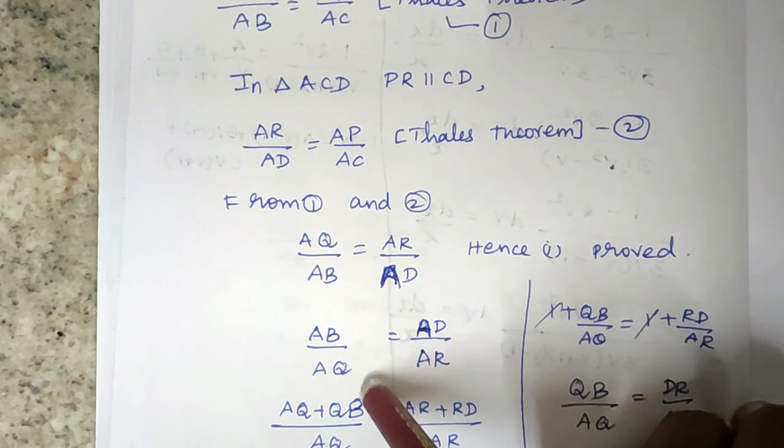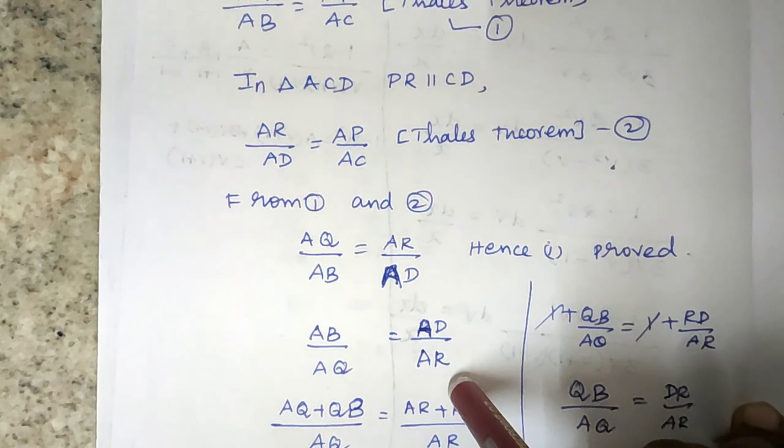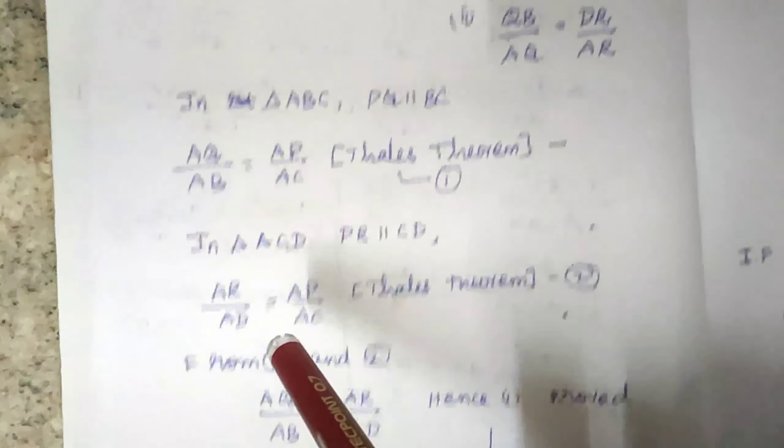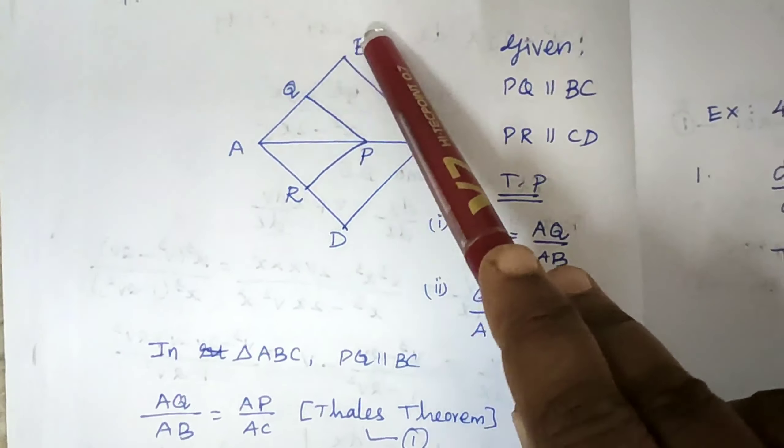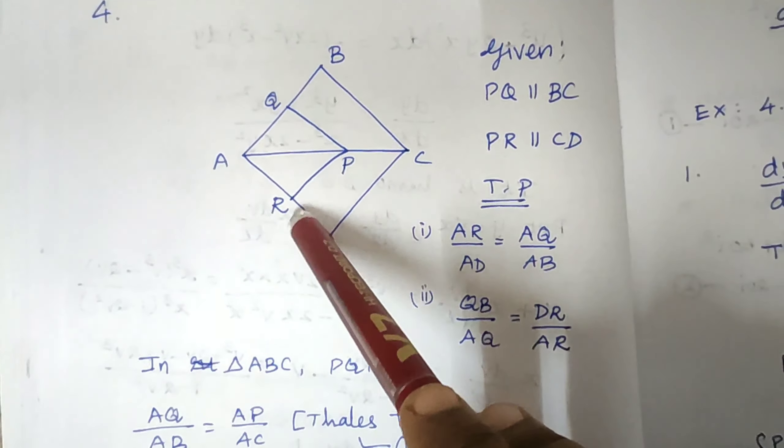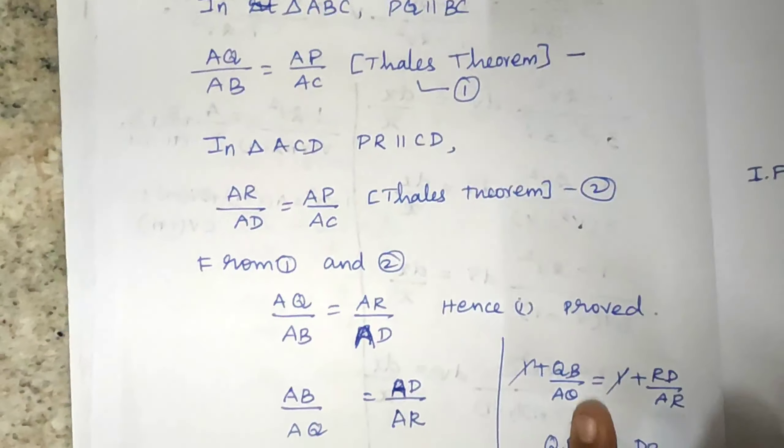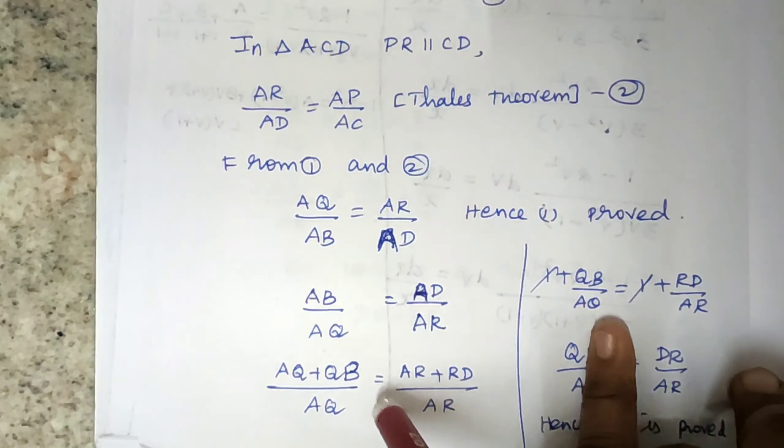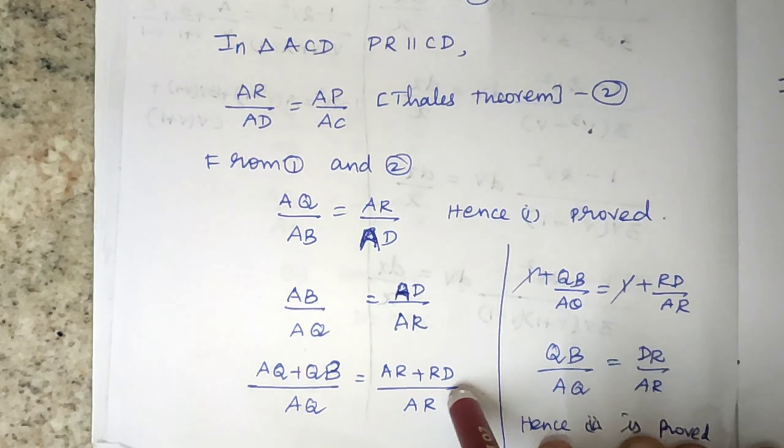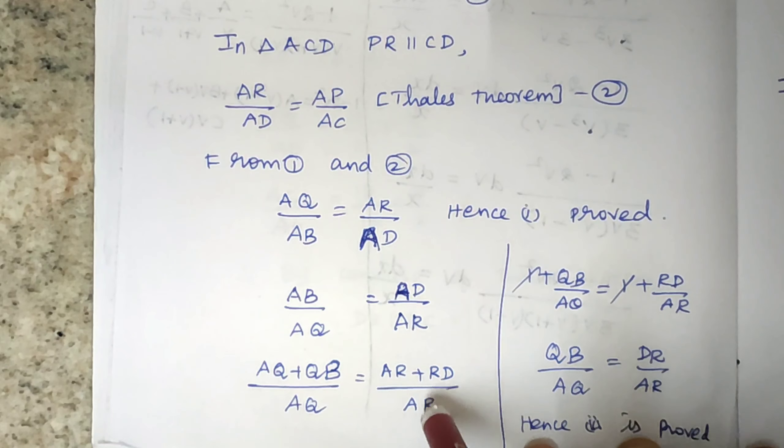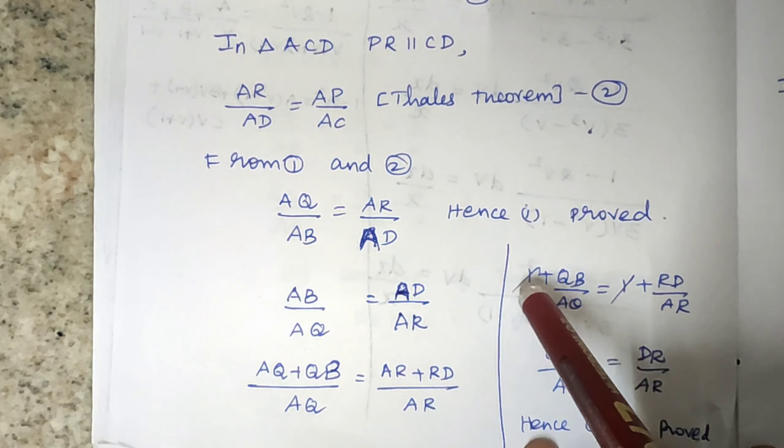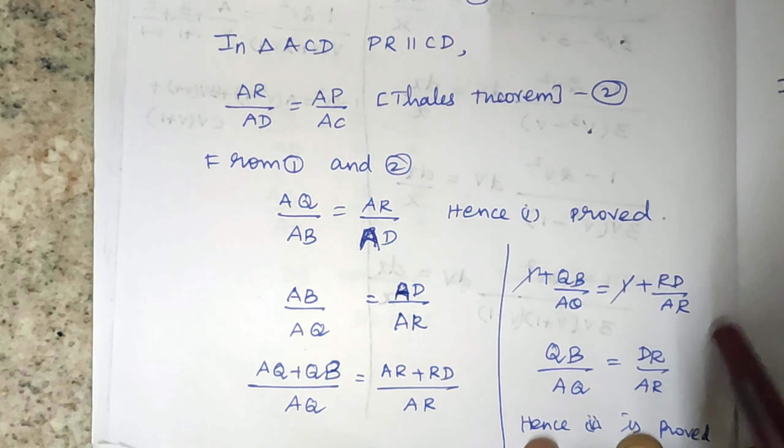AB by AQ equals AD by AR. AB is AQ plus QB divided by AQ. AQ by AQ is 1, QB by AQ is this. AR by AR is 1, RD by AR is this. So this is plus 1, plus 1.